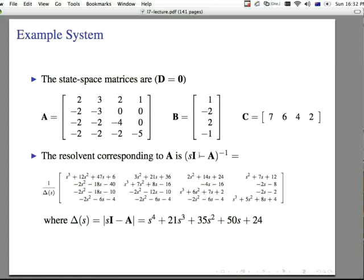If we look at a resolvent, which is SI minus A to the minus 1 power, the resolvent there is equal to the other long derivation shown here. And that's mainly because it's a 4 by 4 matrix. And this delta of S is just a determinant of SI minus A, or the determinant of all of this, in that A matrix itself.